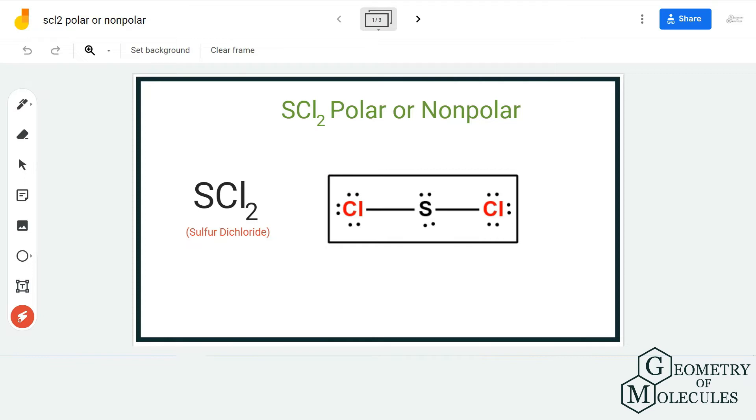This is the Lewis structure of SCL2, that is sulfur dichloride, in which sulfur atom is forming two single bonds with two chlorine atoms.